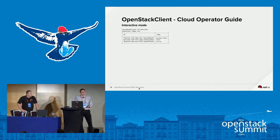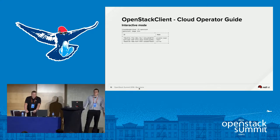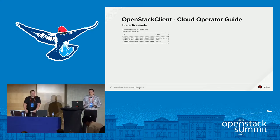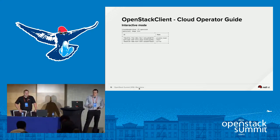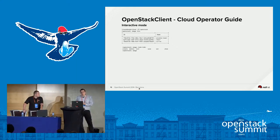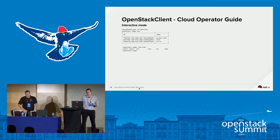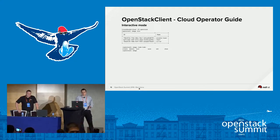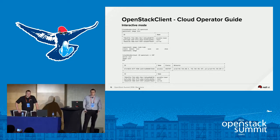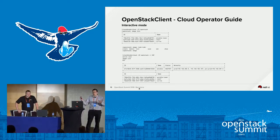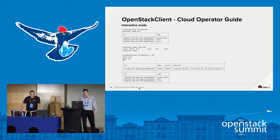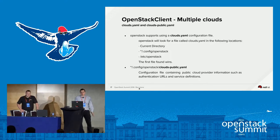There's also interactive mode. To get into it, simply type 'openstack' and then start typing commands without the 'openstack' prefix in front — 'image list' is an example. The interactive mode has auto-completion enabled by default, so you can use tab-tab to see all commands. You can also script using interactive mode — for example, executing two commands in one go.